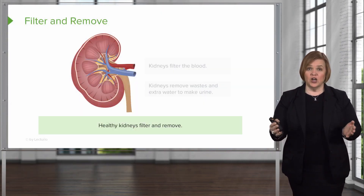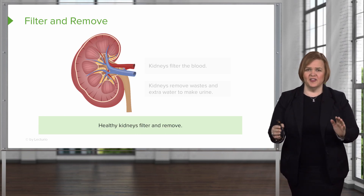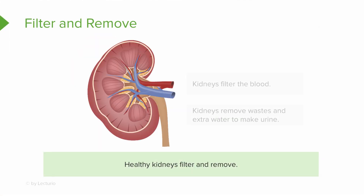The primary job of the kidneys is to filter and remove — that's what healthy kidneys do. They filter the blood that enters through the renal artery, and dump off a small percentage of waste and water to make urine, which goes down the ureter into the bladder and out of the body.